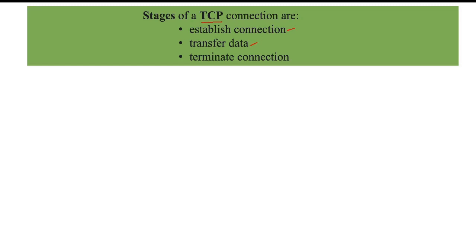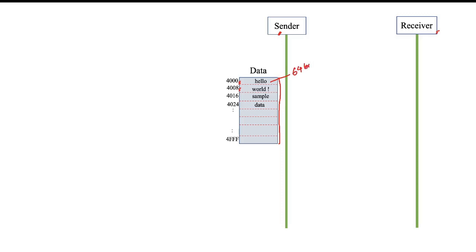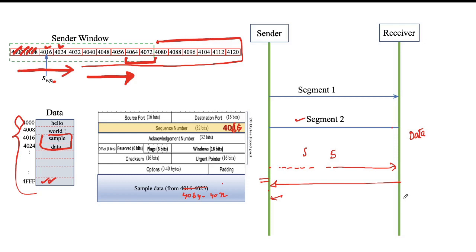TCP is a reliable and connection-oriented protocol used in the transport layer. The operation of TCP is performed in three different stages: the first stage is called connection establishment, the second stage is called data transfer, and the third stage is called connection termination. In this video we will explore all three phases of TCP connection in detail. Because of the connection establishment phase, TCP is called a connection-oriented protocol.